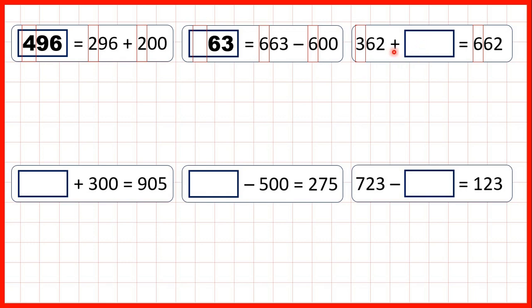Now, whenever we get a missing number addition, one way to solve it is to use subtraction. So we could work out 662 minus 362, or we could spot that we need to add three hundreds to give us 6 as the hundreds digit of our answer. So our missing number is 300.